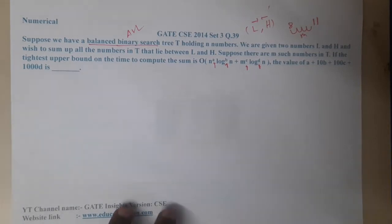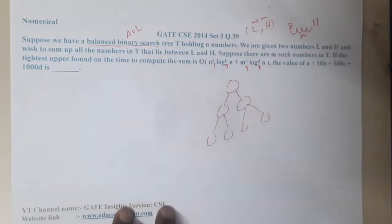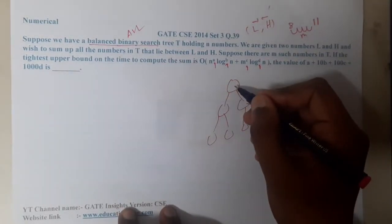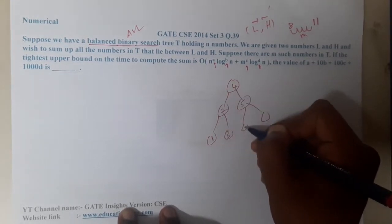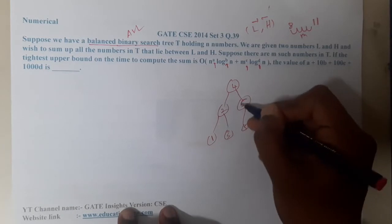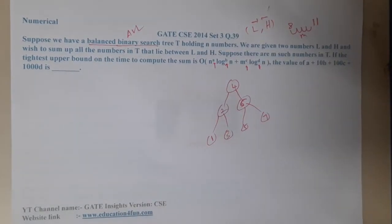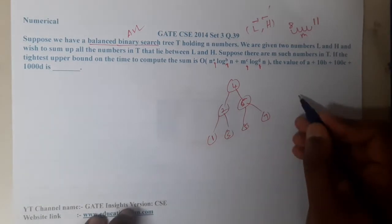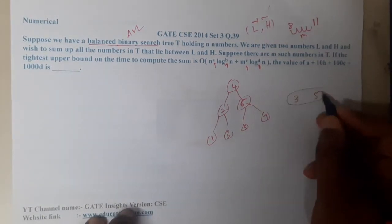Now let us take a small example. Let me draw a perfect balanced tree. Let me write the values: 1, 2, 3, 4, 5, 6, and 7. We need to have L and H, right? Assume that the value of L is 3 and the value of H is 5. So we need to come to this location - the last level will be the worst case.